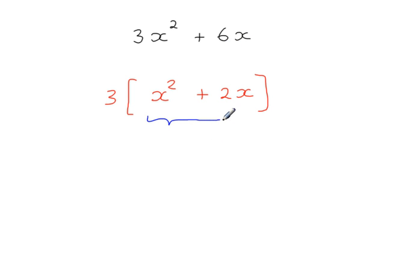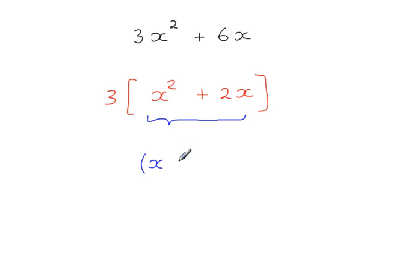Now complete the square for these two terms. We have x, and half the coefficient here is 1. So we get x plus 1, all squared, minus that term squared, which gives you 1.